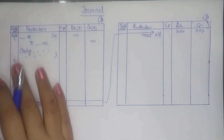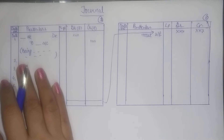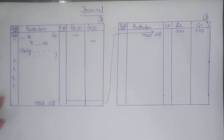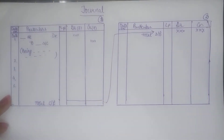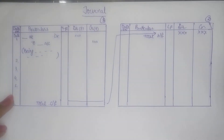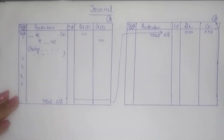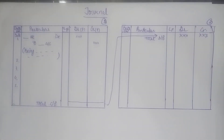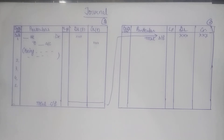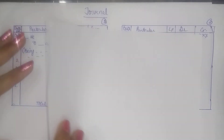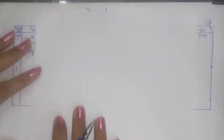Now we have understood how to write an entry and what the format is. But how will the entry be made? How will you write the entry — what is debit and what is credit? For this, we use the rules of debit and credit that we studied earlier. So accordingly we will make the entry of each transaction.